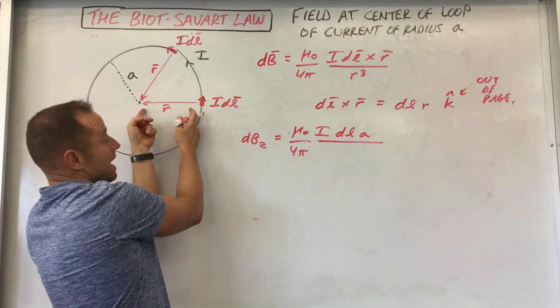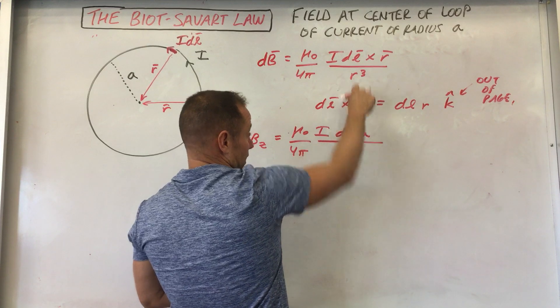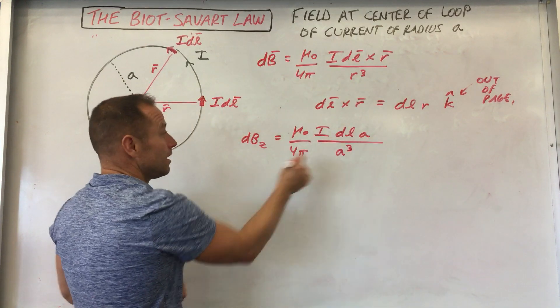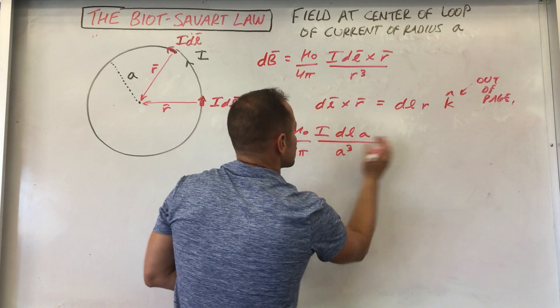So that's A cubed, plugging in A for R. And so you can see that that A is going to cancel. And you get an A squared down here. So now we're ready to integrate.